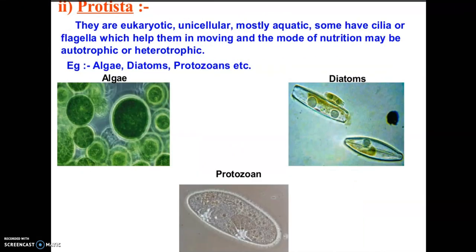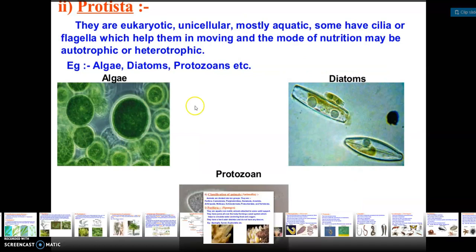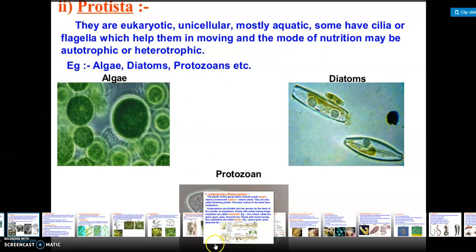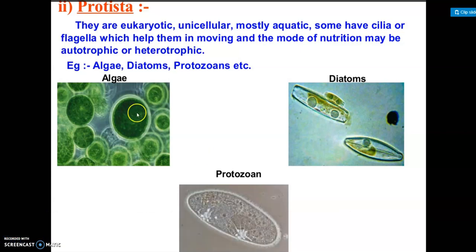Kingdom Protista: they are eukaryotic and unicellular, and are mostly aquatic. They have cilia or flagella which help in movement, and their mode of nutrition may be autotrophic or heterotrophic. Examples include algae, diatoms, and protozoans.